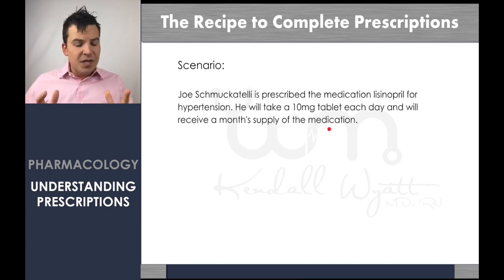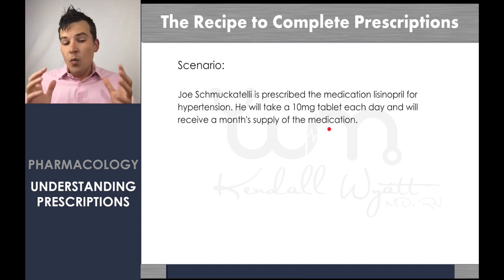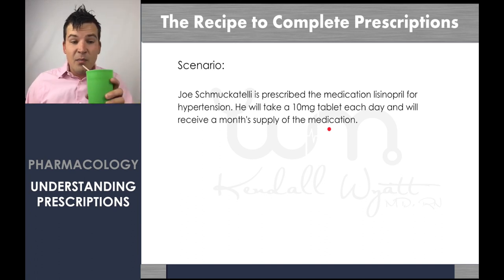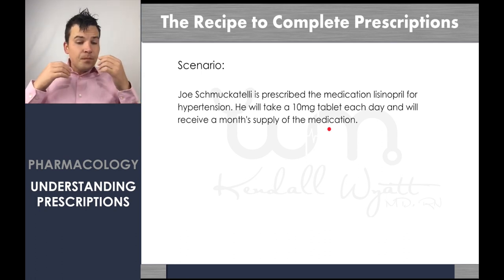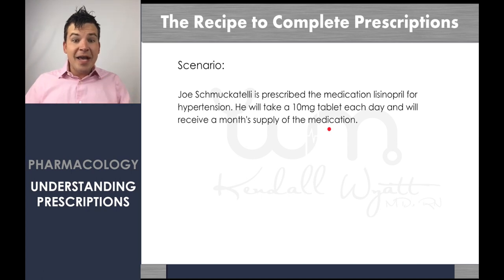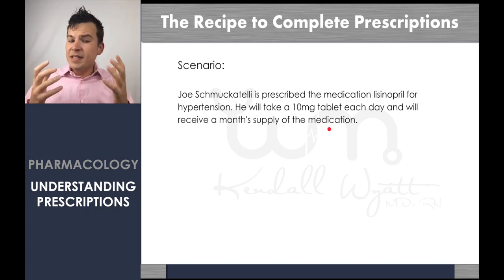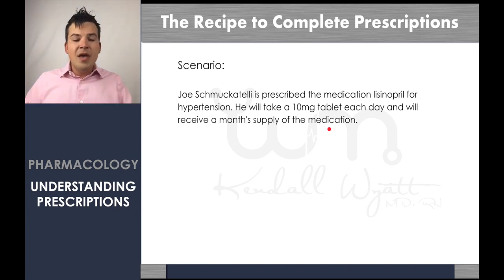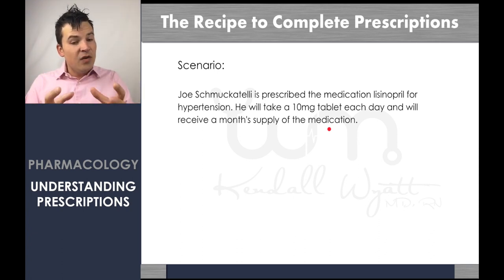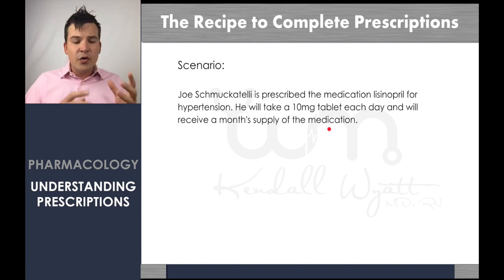I like to learn with scenarios, so we're going to go through scenarios as we do these — you can fill them out or just follow along. Joe Schmucatelli is prescribed the medication lisinopril for hypertension. He will take a 10 milligram tablet each day and receive a month's supply. Whether you're writing or receiving this prescription, you still really need to know how it's going to be written.